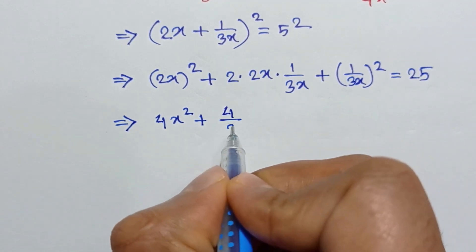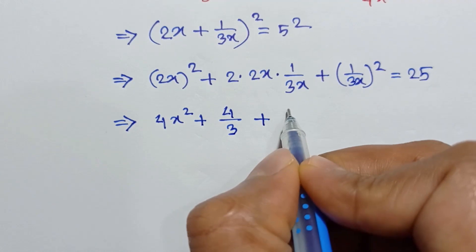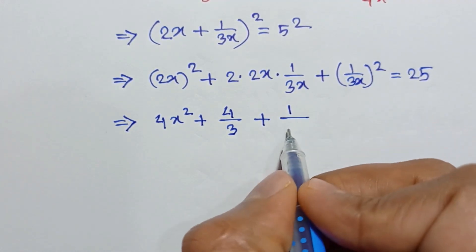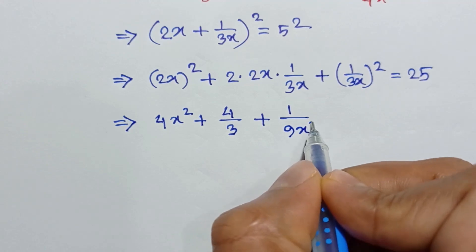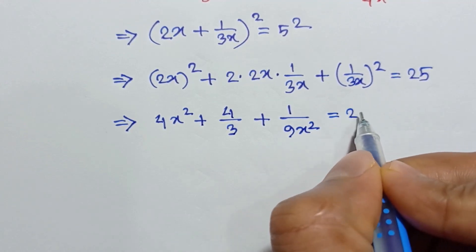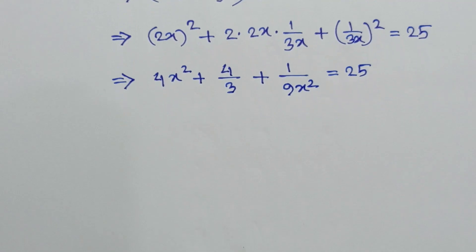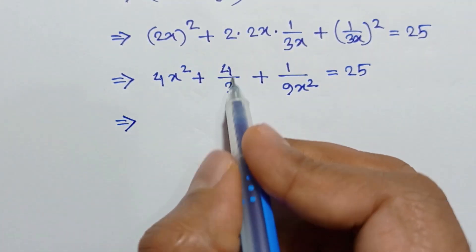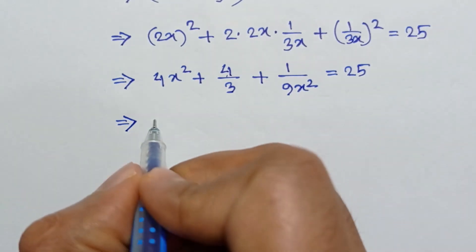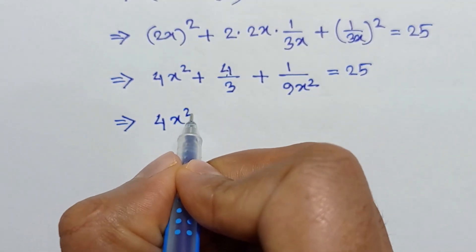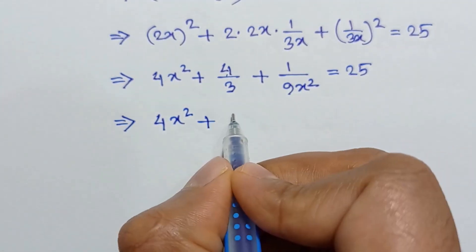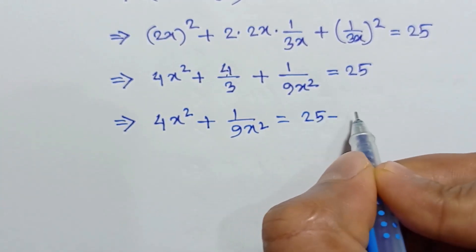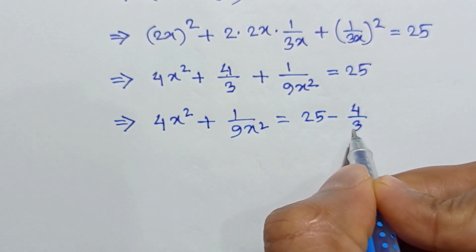Simplifying: 4x squared plus — the x's cancel out, 2 times 2 is 4, so 4 over 3 — plus 1 over 9x squared is equal to 25. Taking 4 over 3 to the right side, we have 4x squared plus 1 over 9x squared is equal to 25 minus 4 over 3.